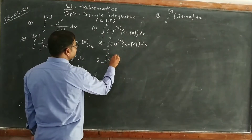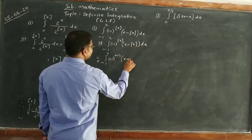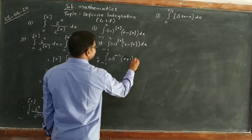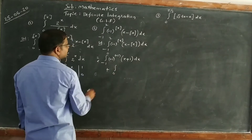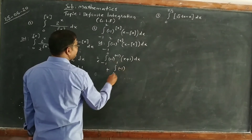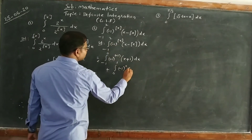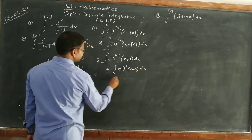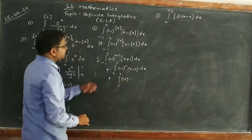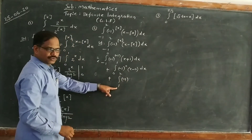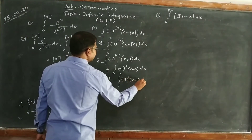So I write directly: (-1)^(-1) times (x - (-1)) dx over [-1, 0]. Plus (-1)^0 times (x - 0) dx over [0, 1], because [x] = 0 between 0 and 1. Plus (-1)^1 times (x - 1) dx over [1, 2], since [x] = 1 between 1 and 2.